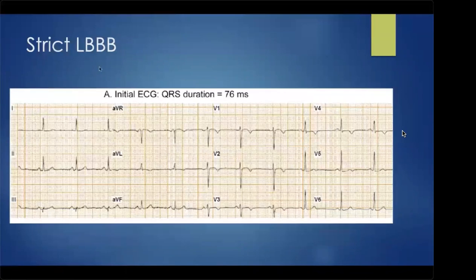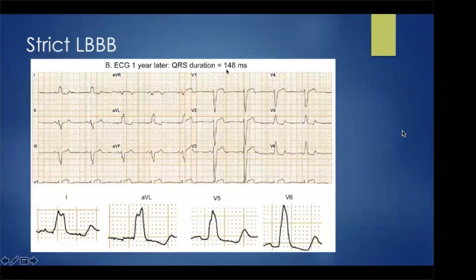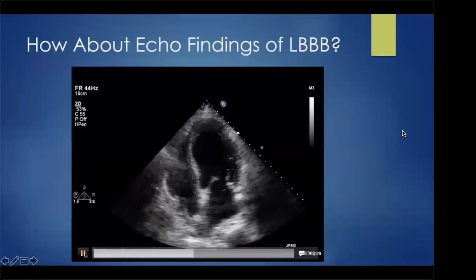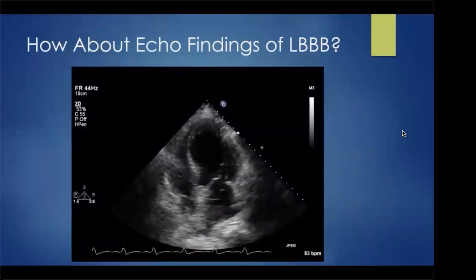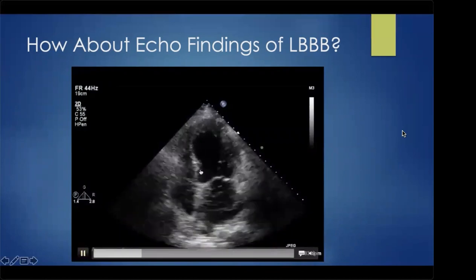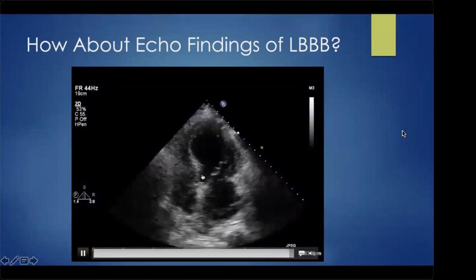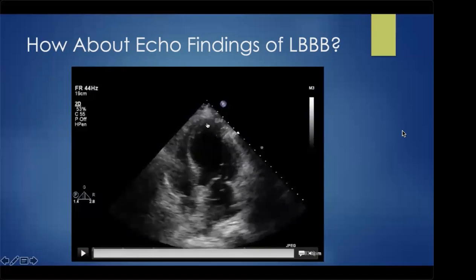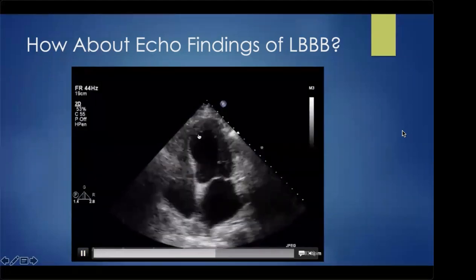In contrast, a true strict left bundle looks like this: a patient with a narrow QRS at baseline who in just one year develops rapid QRS prolongation with notching — the only explanation being conduction system disease. On echo in the apical four-chamber view, two striking characteristics are visible. During isovolumetric contraction, there is a septal flash, and at the apex there is an apical rock as electricity propagates. The presence of septal flash and apical rock is diagnostic of left bundle branch block.